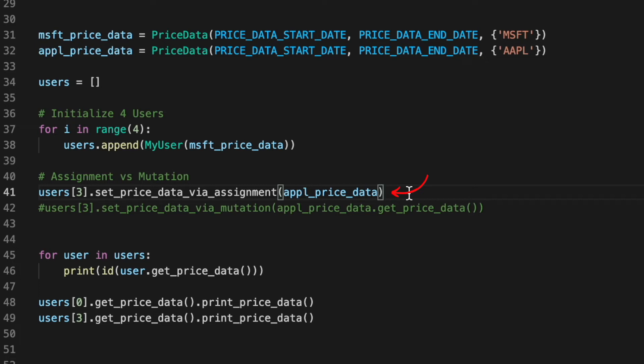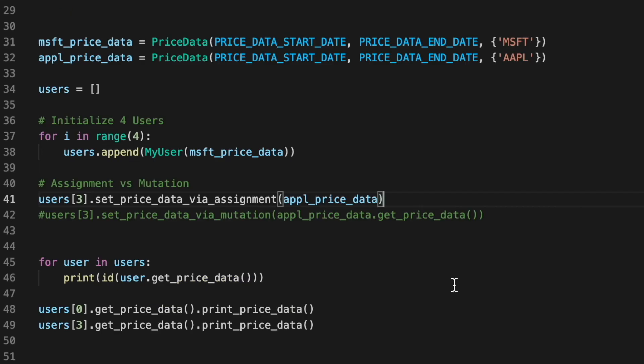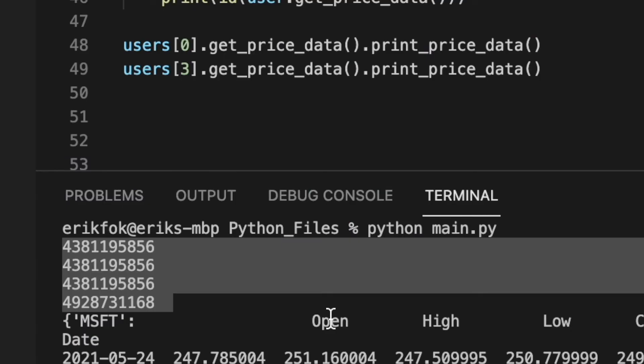Next, we're going to update the last user's price data via assignment. Here you can see within the function, we're assigning a value. Lastly, we're going to loop through the users and print the IDs of their price data objects. Here in the console, we can see our last user has actually received a brand new ID for its price data object. Because we assigned a new value, we've got a brand new object.